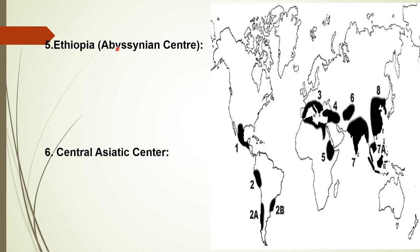The Ethiopian or Abyssinian center includes Abyssinia and part of Somaliland. It is rich in wheat, barley, grains and legumes like Abyssinian hard wheat, poulard wheat, emmer, Polish wheat, barley, grain sorghum, pearl millet, African millet, cowpea, and flax.